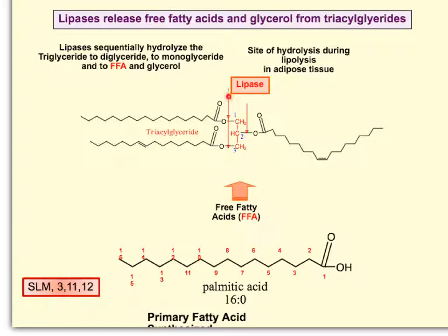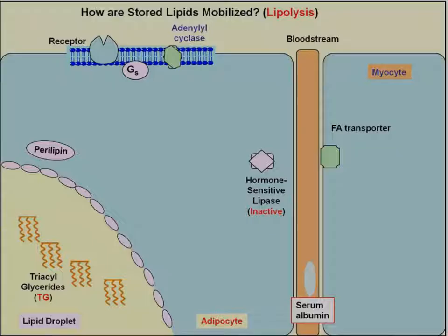To release stored fats, lipases cleave the ester bonds. Cleaving one bond leaves a diacylglycerol; cleaving two bonds gives a monoacylglycerol; cleaving all three bonds yields a glycerol and three fatty acids. Triglycerides are stored as droplets and are surrounded by a protein called perilipin, which gives the lipid droplets structural stability and protects them from interaction with cytosolic compounds such as lipases.